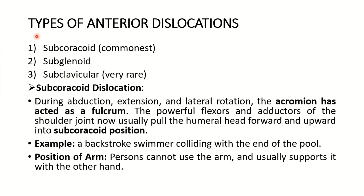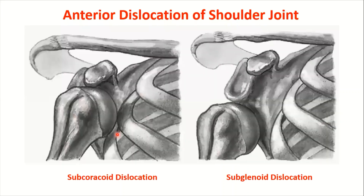Let's discuss the types of dislocation. First is the subcoracoid, which is the commonest; second is the subglenoid; and third is the subclavicular, which is very rare. For subcoracoid dislocation: during abduction, extension, and lateral rotation, the acromion acts as a fulcrum. The powerful flexors and adductors of the shoulder joint then usually pull the humeral head forward and upward into the subcoracoid position, as you can see here.